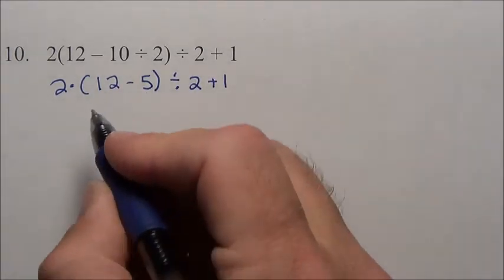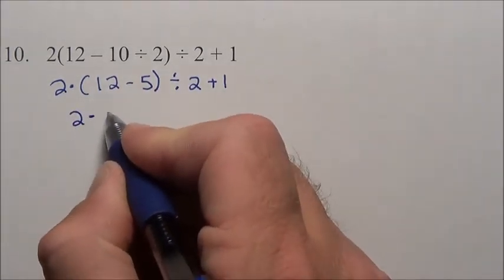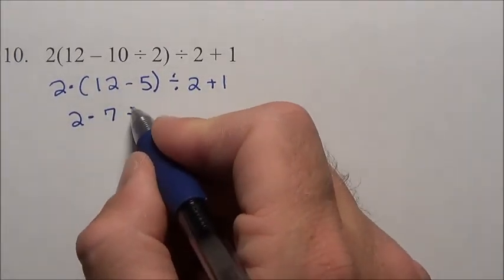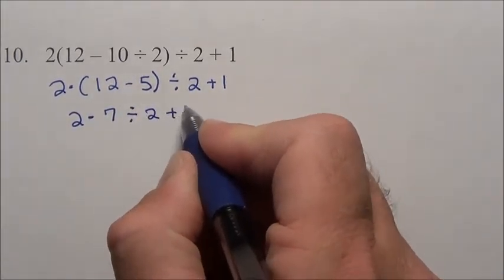Now I'm going to do the parenthesis first. 12 minus 5 is 7, so it's 2 times 7. Since I have a single number in there I can go ahead and drop the parenthesis.